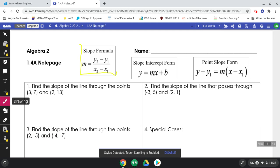This is your slope formula, m is your slope, and then m equals y2 minus y1 over x2 minus x1.